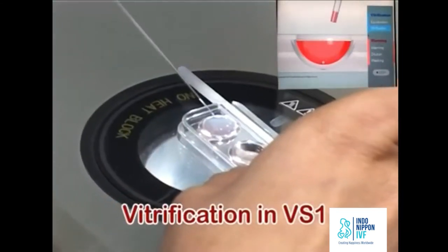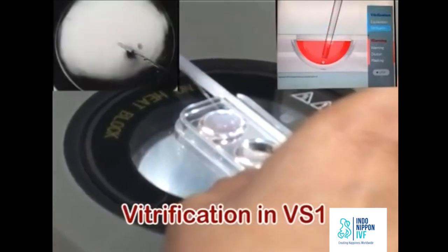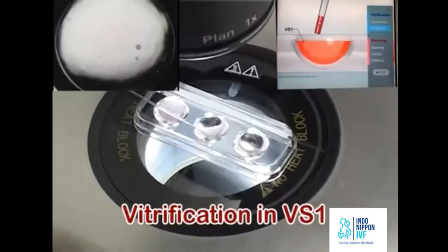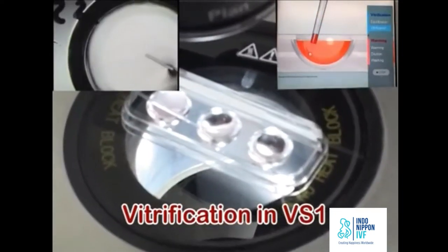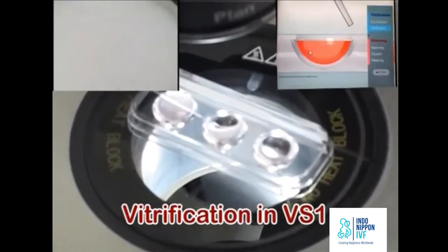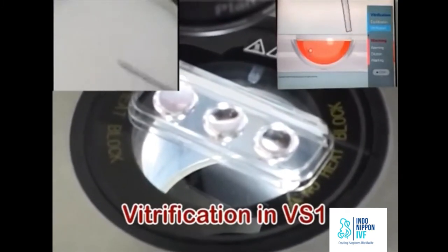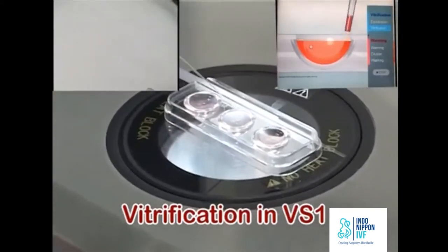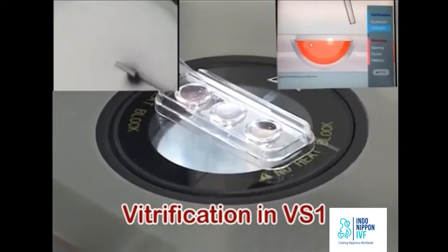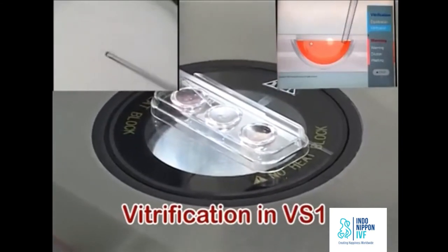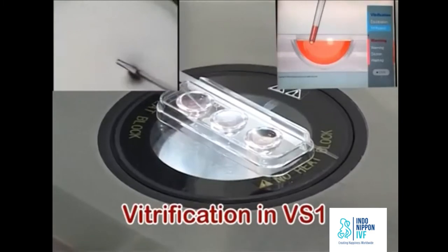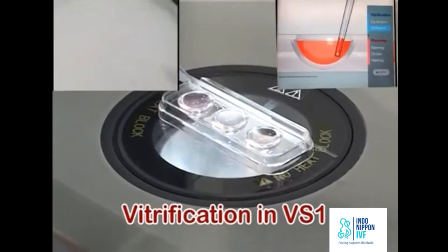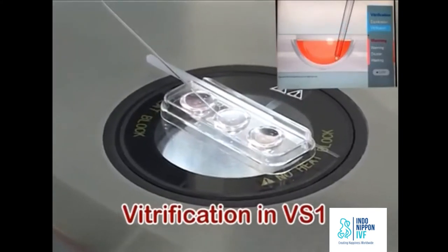Aspirate the oocyte with ES at the tip of the pipette. Transfer the oocyte at the middle depth of VS-1. Discard the remaining ES outside the well and aspirate fresh VS-1 from the edge of the wall. Oocyte floats immediately to the surface of VS-1. Aspirate oocyte at the tip of the pipette and transfer it again to the bottom of VS-1. The oocyte floats slowly to the middle depth and stops.